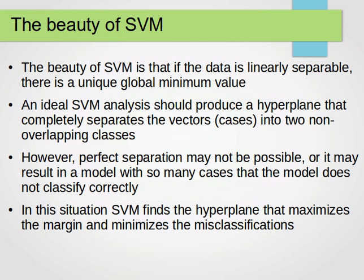The beauty of support vector machines is that if the data is linearly separable, then there is a unique global minimum value — meaning if a solution exists, it will be found. If the data is linearly separable, it's possible to find a maximum margin. The rate of change becomes zero when the minimum is found, meaning we have found the solution. An ideal SVM analysis should produce a hyperplane that completely separates the vectors into two non-overlapping classes.